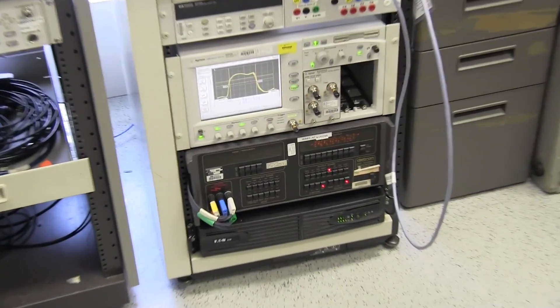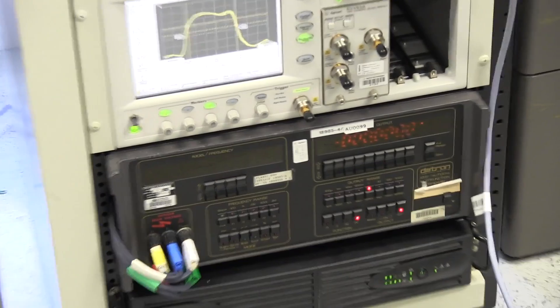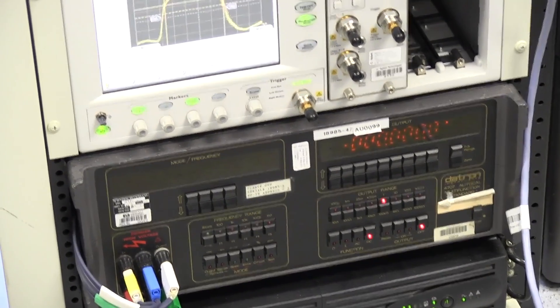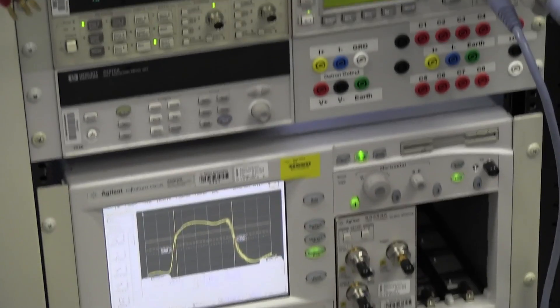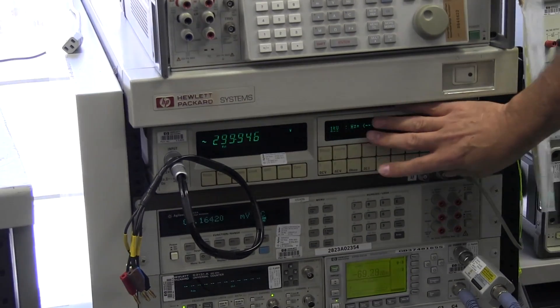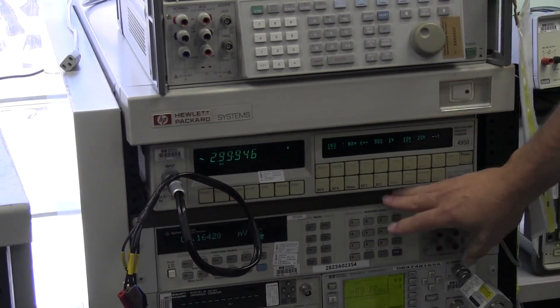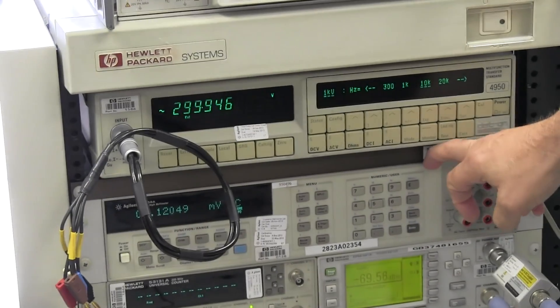So we developed a rack that uses a Daytron 4950, which is called the calibrator's calibrator. I believe Pete's talked to you about the gold 3458. Yes, so we have one of those.